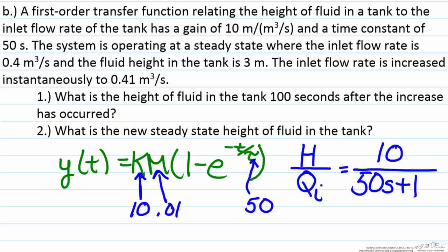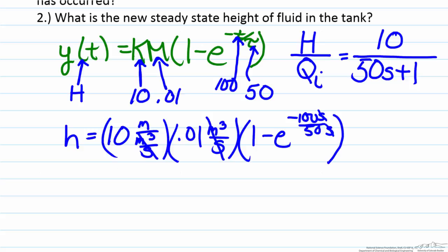We are interested in what is going to happen at a time of one hundred seconds. So if we substitute everything in, we can find some information about y of t, where in this case y is the output variable which is h. When we substitute all of these numbers in we get an answer of h equals .086 meters.